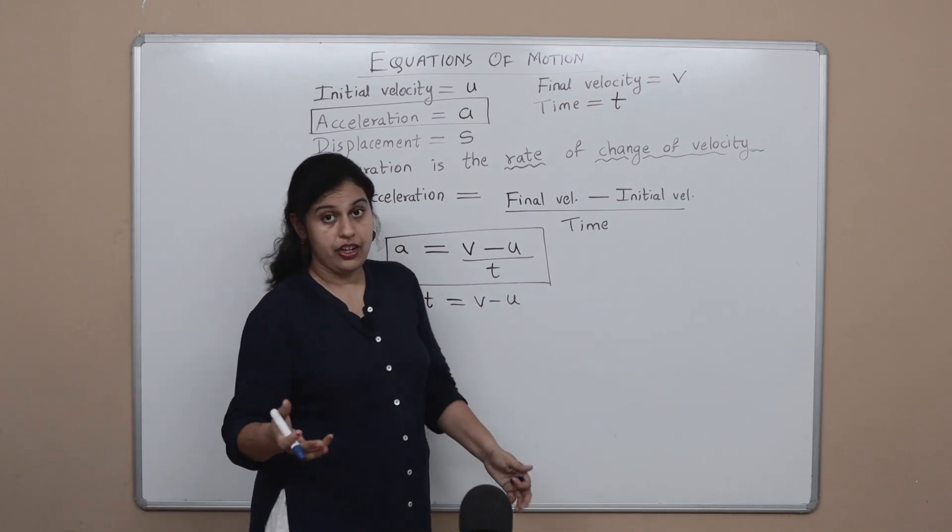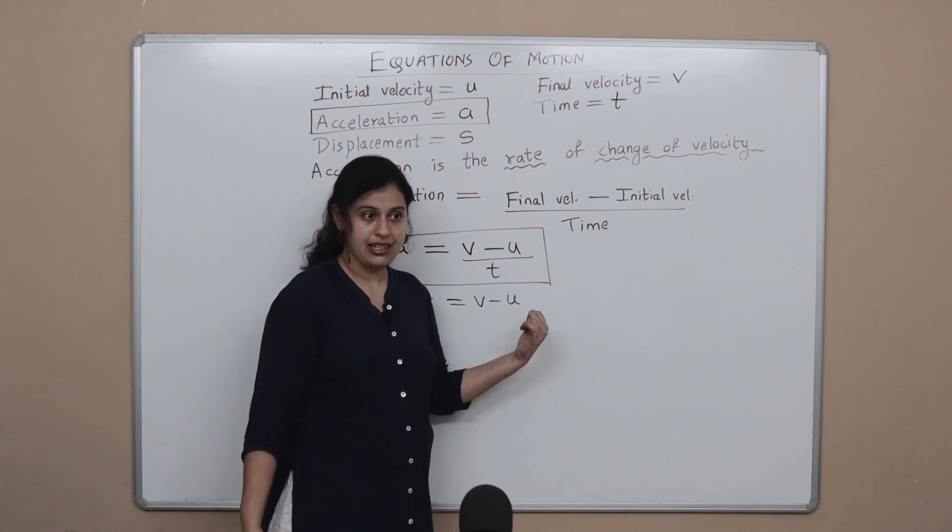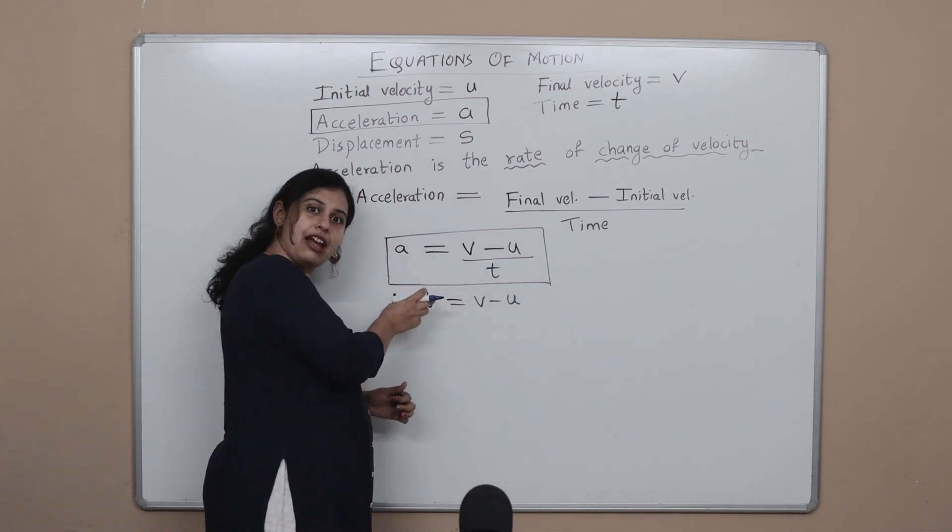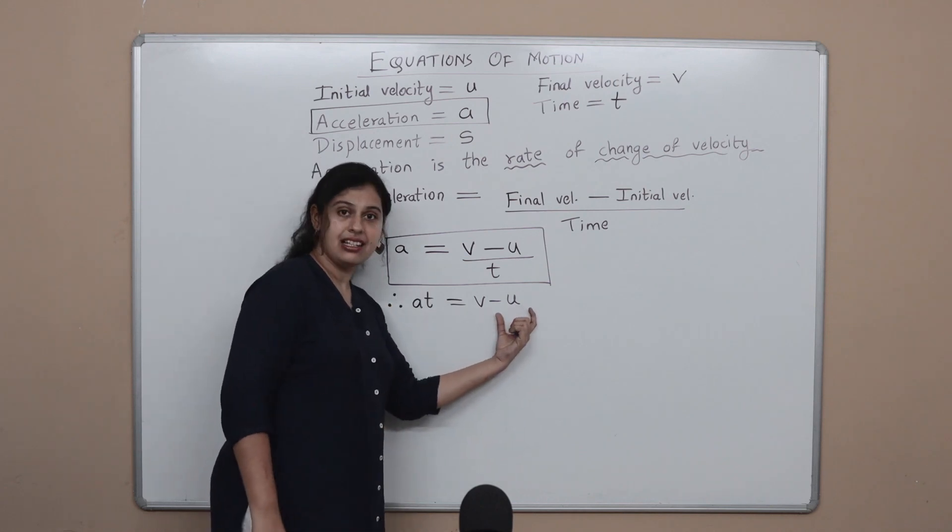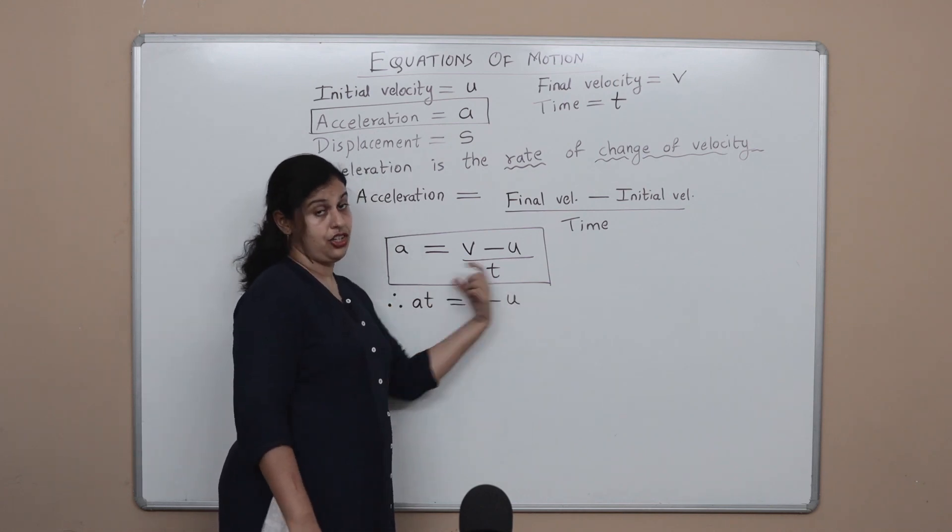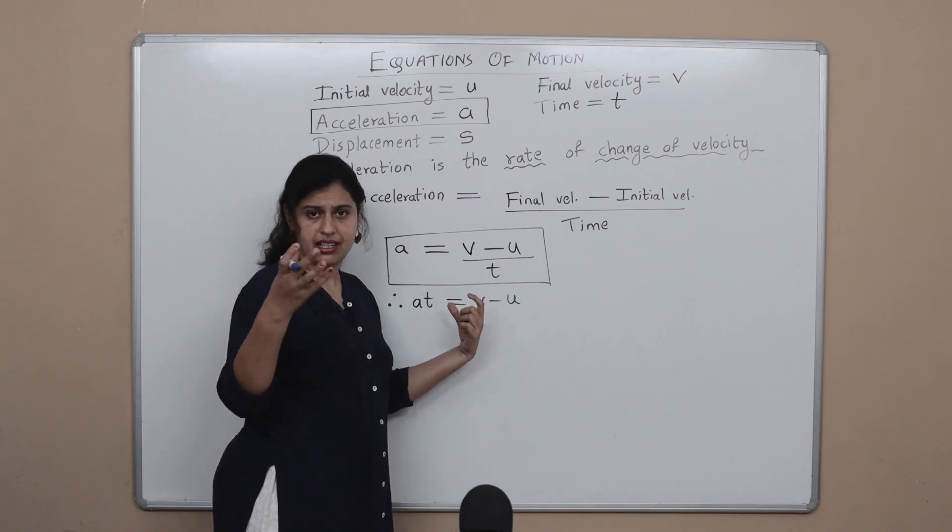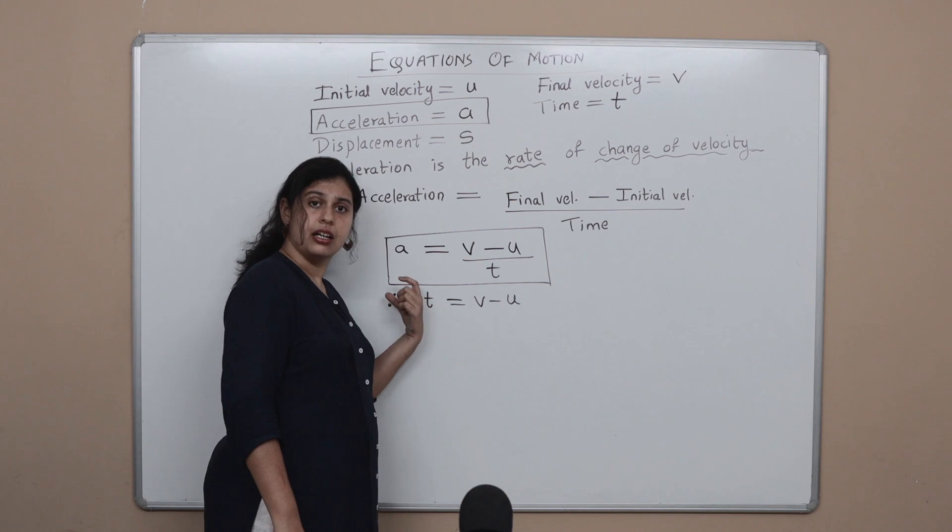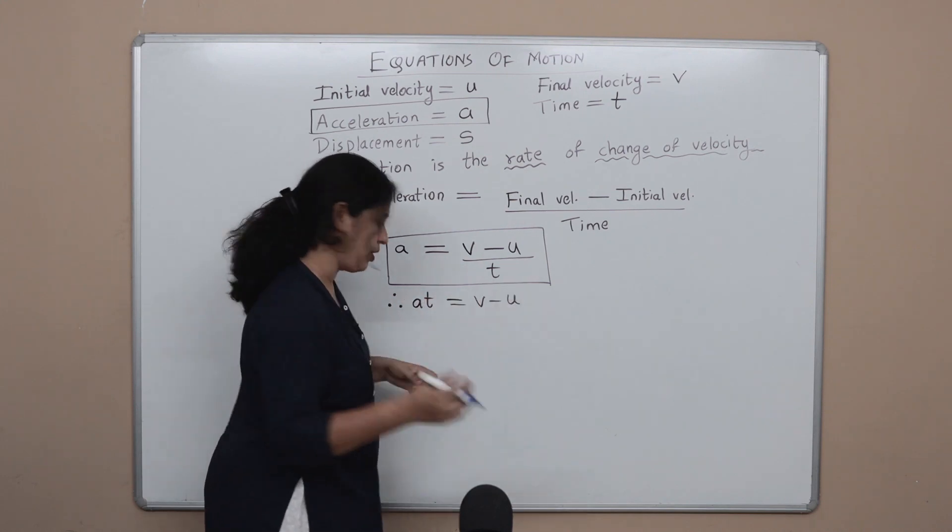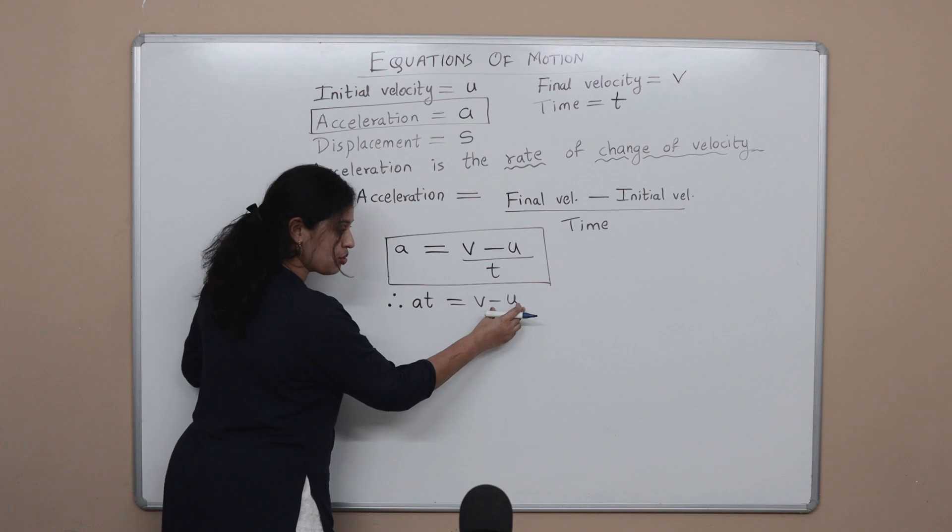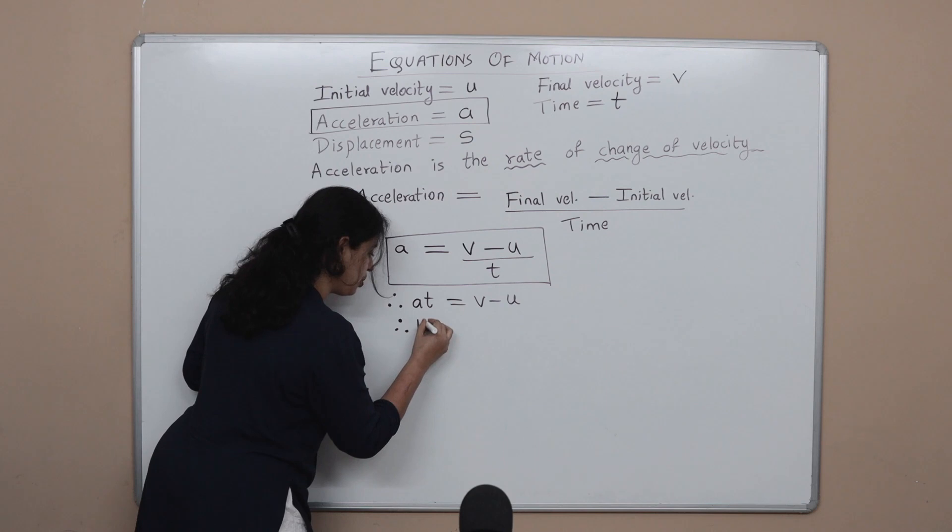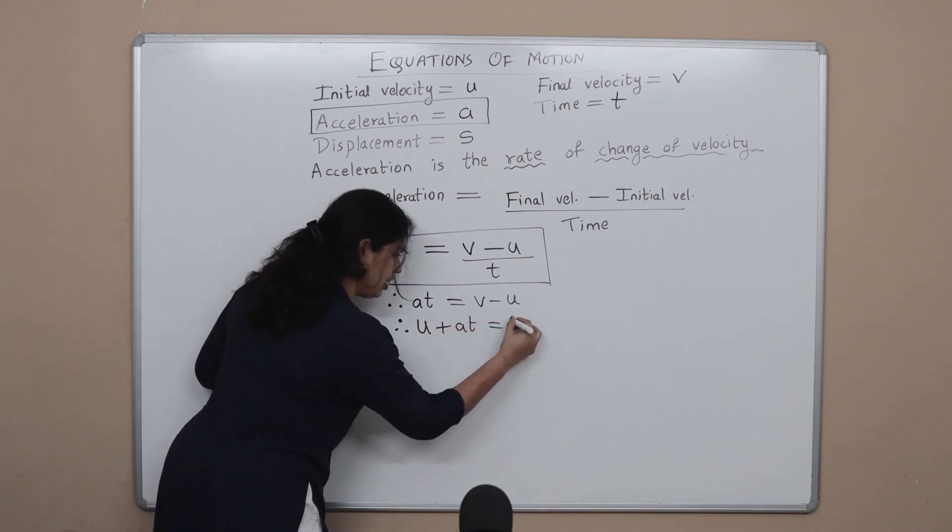Now in my equation I do not even want a minus sign, I want a plus sign, so I pick this minus u and I take it to the left. Now when minus numbers change sides, they change signs, not just minus, even plus. Minus to the left becomes plus, plus to the left becomes minus, and so on. So this minus u will go to the left hand side and will become plus u, so I have u plus a t is equal to v.